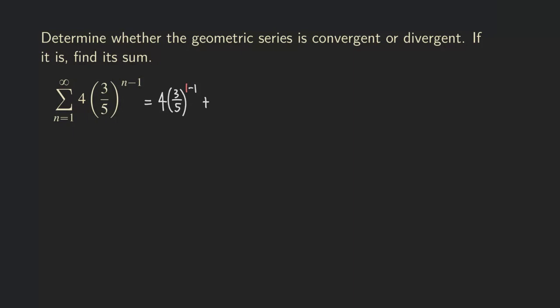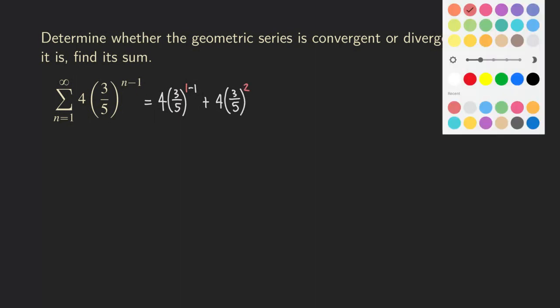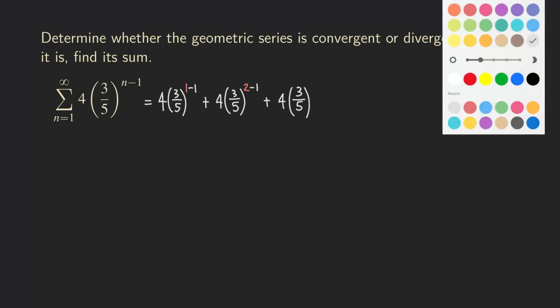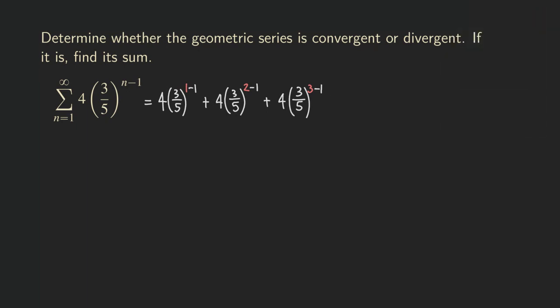Now if you want to write down the second term, then you are going to plug in two. So we have two minus one in the exponent. And then if you want the third term, it's going to be three over five raised to the three minus one power, and so on, because this is an infinite series — there is no end on the sum.